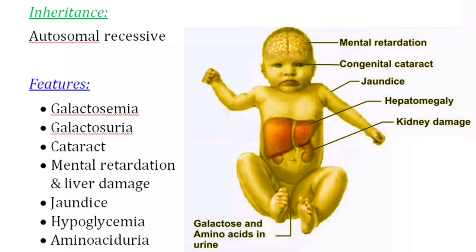The reason for hypoglycemia is accumulation of galactose-1-phosphate, which inhibits glycogen phosphorylase and phosphoglucomutase. These two enzymes are involved in glycogenolysis, which supplies glucose by degrading glycogen. So glycogenolysis is the breakdown of glycogen to glucose.